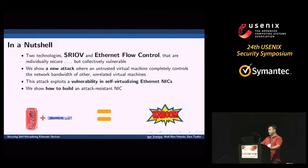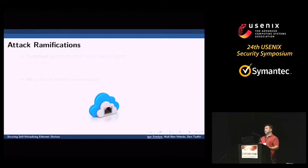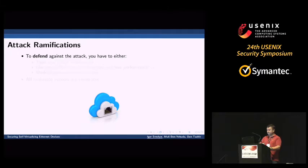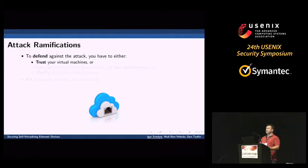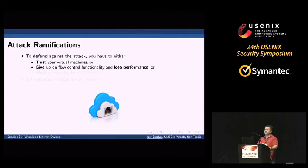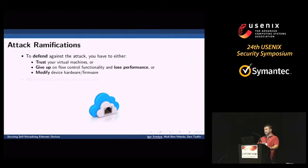Then I will show and explain how to build an attack-resistant SR-IOV device. What are the consequences of this attack and how can we defend against it? The simple thing is to just trust our virtual machines, but such a solution would not be acceptable for cloud providers, private or public. Another option is to give up on flow control functionality, but we will lose performance. This would not be acceptable for data centers and high performance computing setups. Or we can modify device hardware or firmware to protect us from the attack.